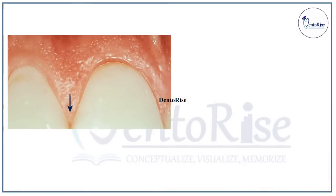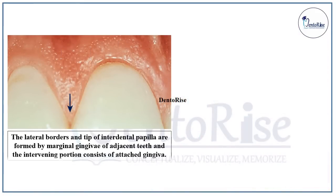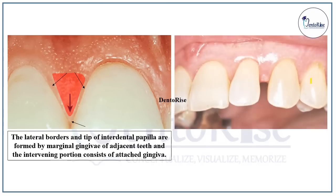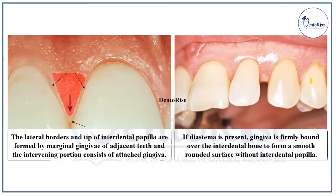The lateral borders and the tip of the interdental papilla are formed by the marginal gingiva of the adjacent teeth, and the intervening portion consists of the attached gingiva, as seen in the figure on the left. However, if diastema is present, gingiva is firmly bound over the interdental bone to form a smooth rounded surface without any interdental papilla.